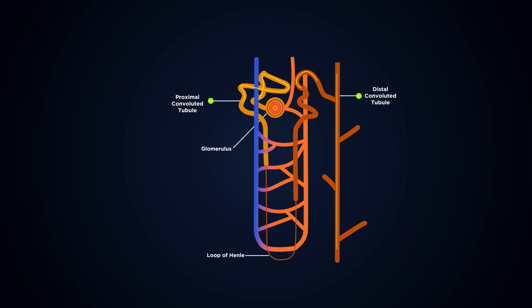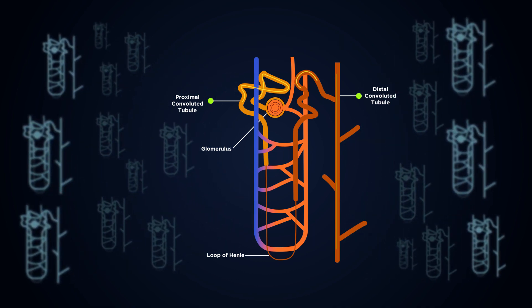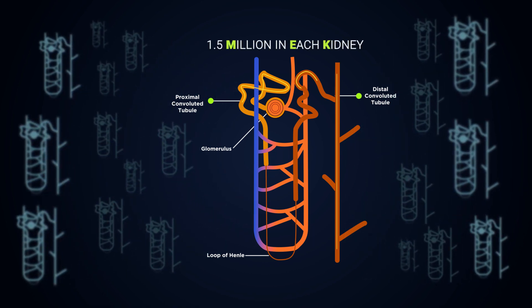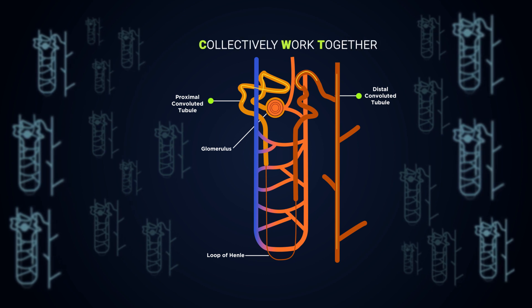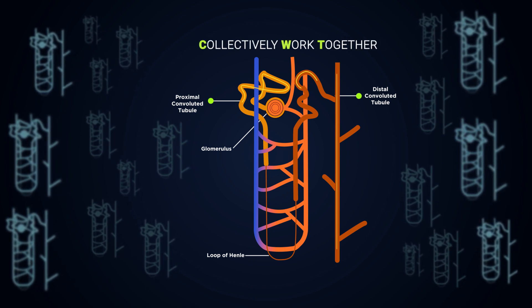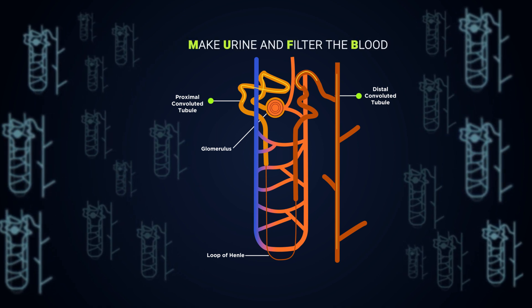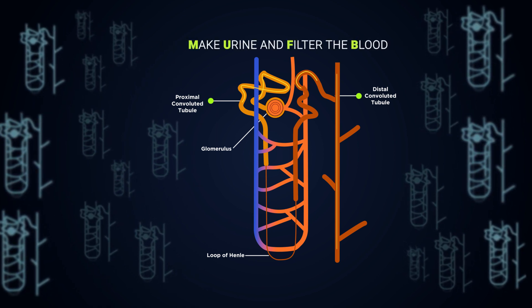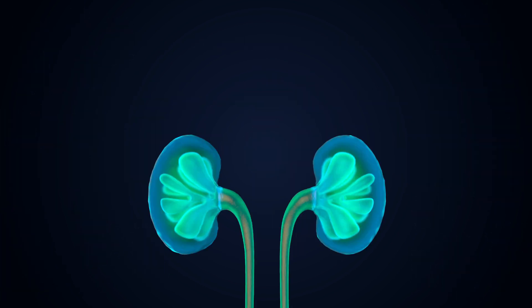Now, in a kidney there are millions of these — around 1.5 million — and they work collectively together to make the urine and filter the blood so that our body remains healthy.